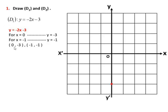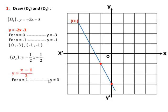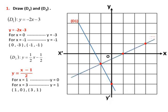Now we put these points on the graph, then we join these points and we get D1. For D2, y equal half x minus half. For x equal 1, we get y equal 0, and for x equal 3, we get y equal 1. The points (1, 0) and (3, 1) are two points on D2. We put these two points on the graph and join them — we get D2.